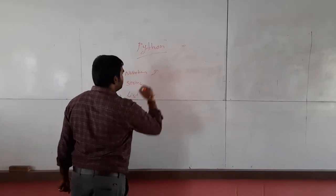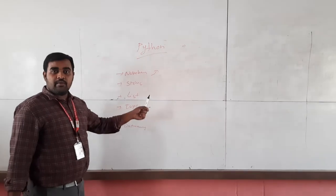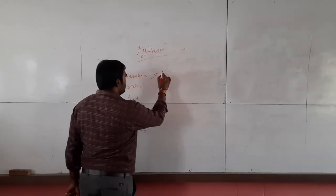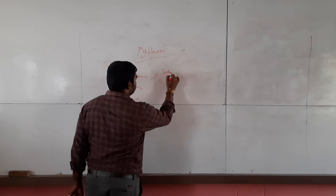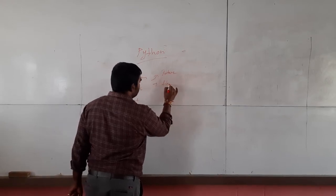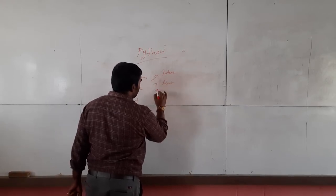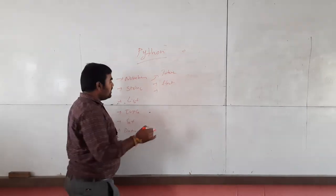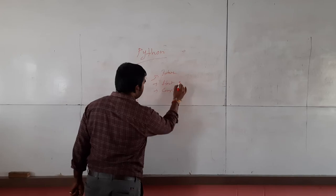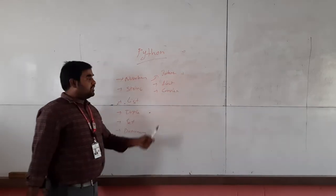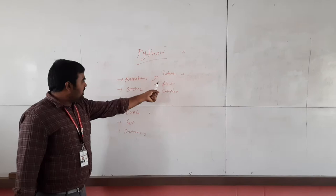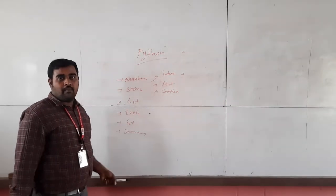The first one is number data types. Number data types are again classified into three types: the first is integer, the second is float, and the third is complex. These are the number data types — integer, float, and complex.